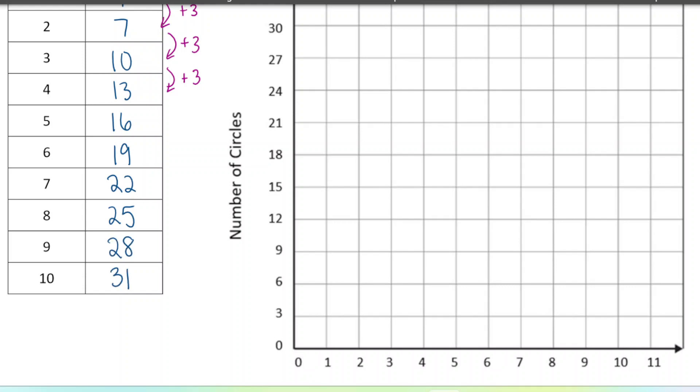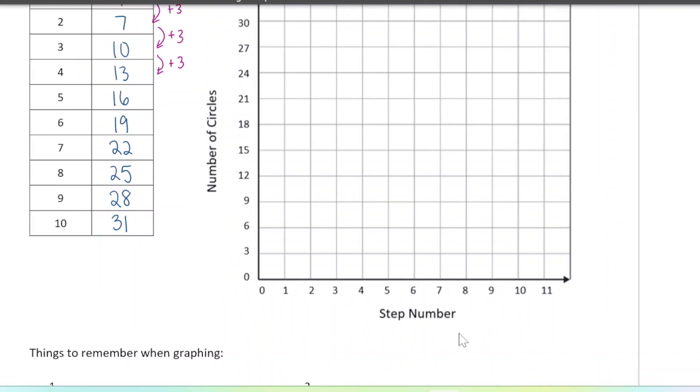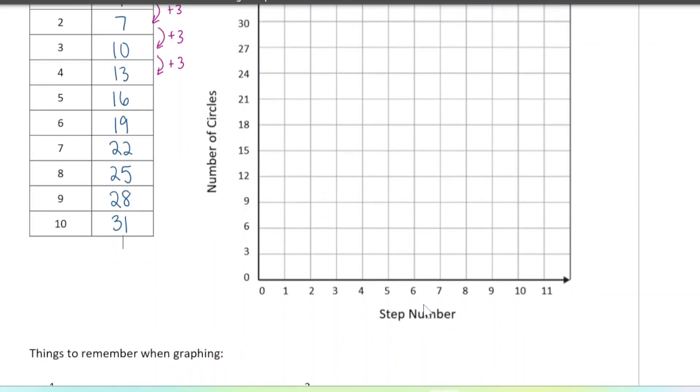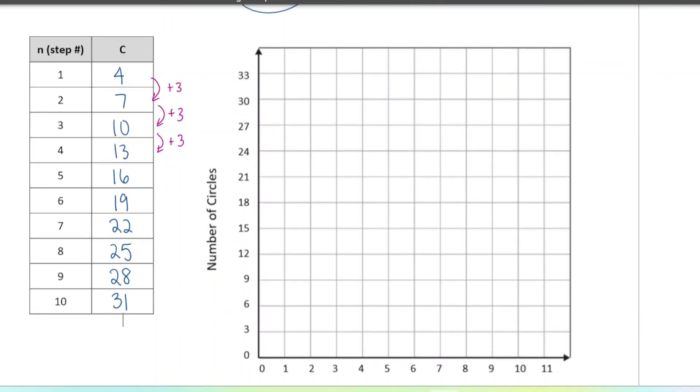Now let's make a graph to represent this pattern. The graph is going to be useful to analyze this pattern. Important to label our graph. If the axes aren't already labeled, we should label them. And I'm just going to call this graph circle pattern. I chose the scale to be three because the pattern is growing by three.